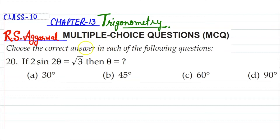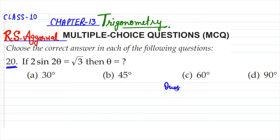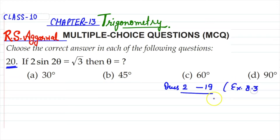Hello everyone. In this video we are going to discuss multiple choice questions of chapter 13, Trigonometry of R.S. Aggarwal. This is a class 10th topic — in NCERT it is chapter number 8, and it is a term 1 chapter. In R.S. Aggarwal, the questions from number 2 to 19 are from exercise 8.3, which is deleted for 2021-22.